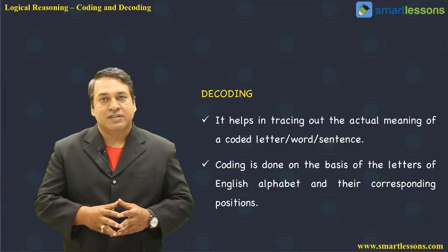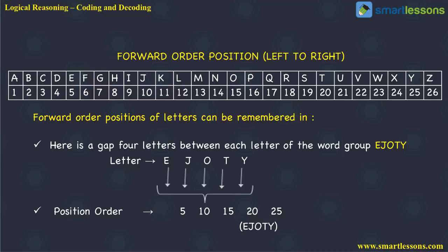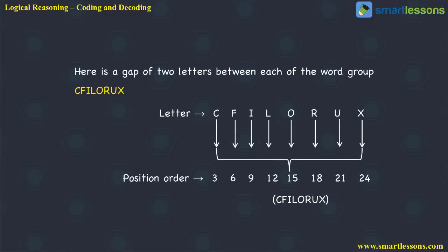We need to know positions in both the forward and the reverse direction. For example, we have A, B, C, D... up to Z — 26 alphabets. If we number them ordinally: A is 1, B is 2, C is 3, D is 4, E is 5, and Z is 26, Y is 25, X is 24, and so on. For example, the word E, J, O, T, Y: E is 5, J is 10, O is 15, T is 20, and Y is 25 — that would be the code.